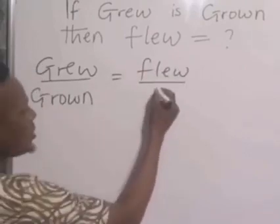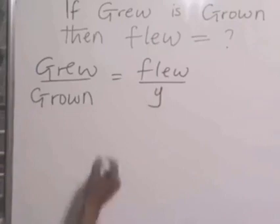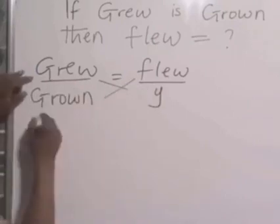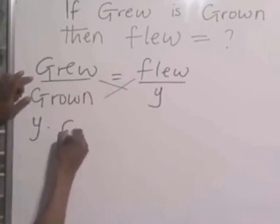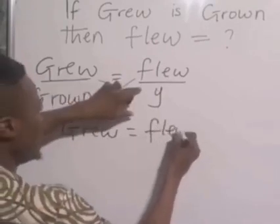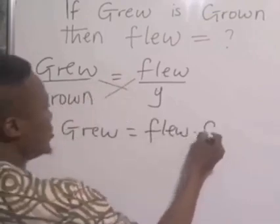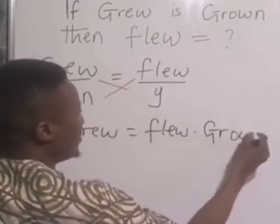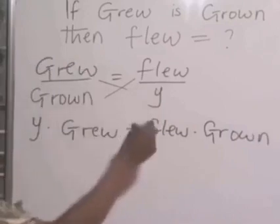The past participle we don't know, so we can represent it with y. Then cross-multiply. Y times grew equals flew times grown. That is cross-multiply.